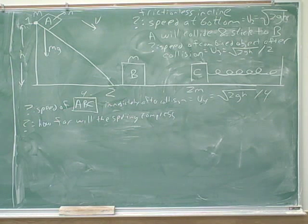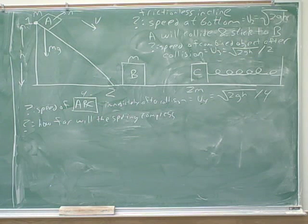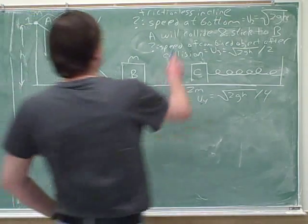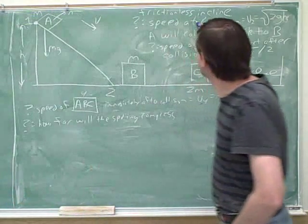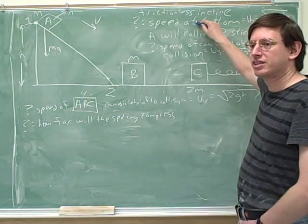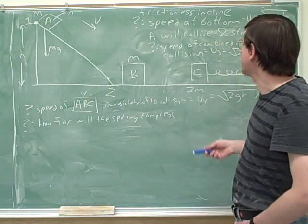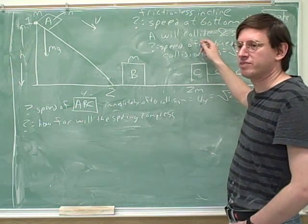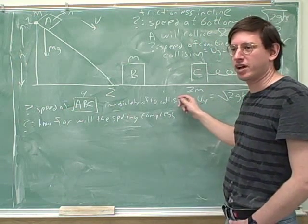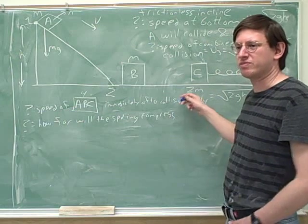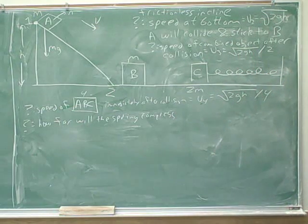We'd have to use the spring constant equation — that would be part of it. But what's the general approach? For the first question we used conservation of energy, then for the second and third questions we used conservation of momentum. So we need a general approach for this last part of the problem.